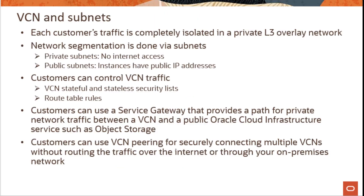We looked at isolation at the compute level, but what about Virtual Cloud Networks and subnets? In OCI, each customer's traffic is fully isolated in a private Layer 3 overlay network. We can do further network segmentation via subnets. There are two main types: public subnets, used for instances that require a public IP address and internet access, and private subnets for instances that do not require internet access or should not have a public IP address.